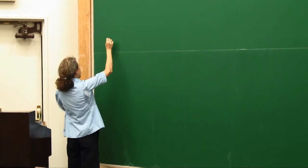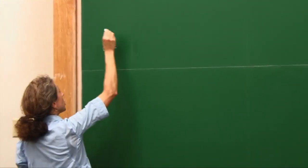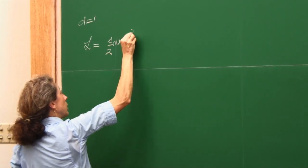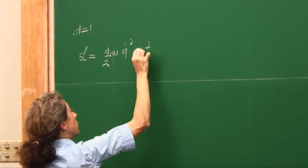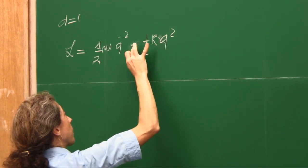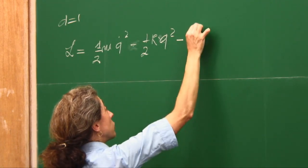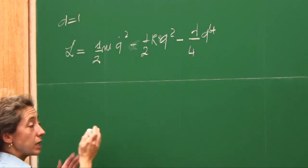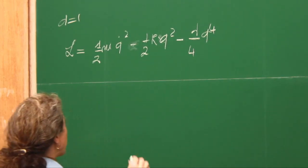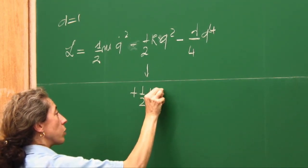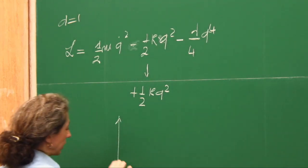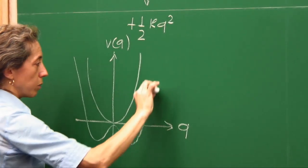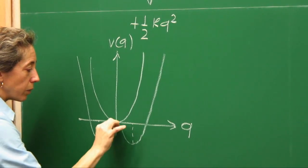You start from a Lagrangian with just the kinetic term, then for a harmonic oscillator you write minus a half k q squared, and for an anharmonic one you add a term with a coupling. This has a potential with a canonical minimum at q equals zero. But if you flip the sign and write it as plus a half k q squared, the potential — instead of having a minimum at q equals zero — now has two minima at plus v and minus v.